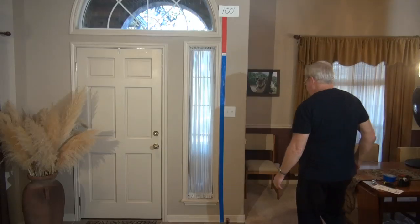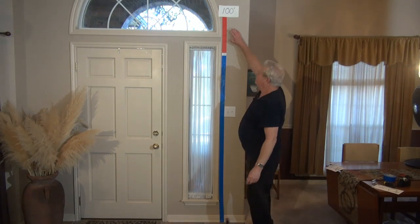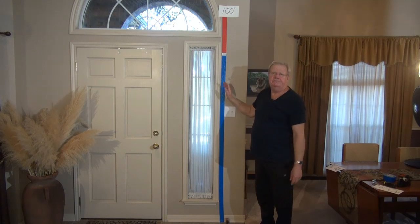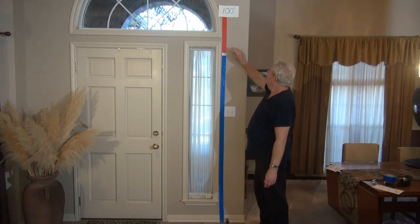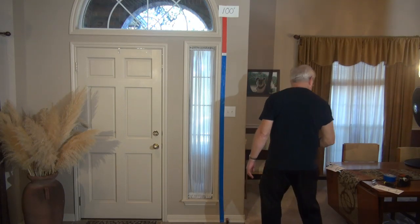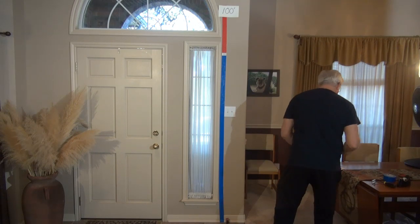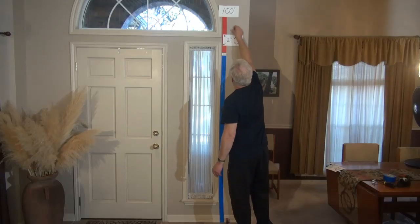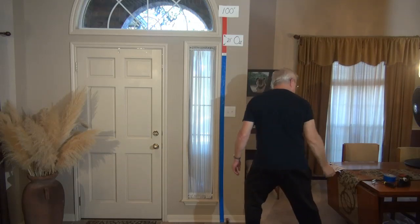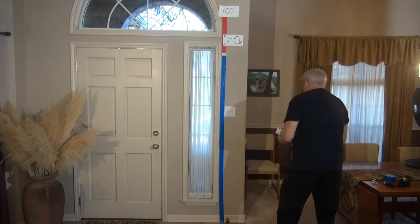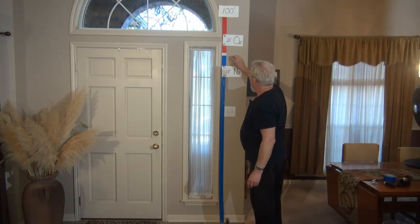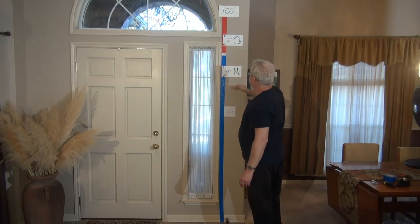It's 100 inches high, and the atmosphere is broken down in this hundred inches into parts — parts per hundred. The top part is red. That's oxygen. Oxygen is 21 parts, that's 21 inches. And then the bottom part is nitrogen, which is the vast majority of the atmosphere, and nitrogen is 78 inches.